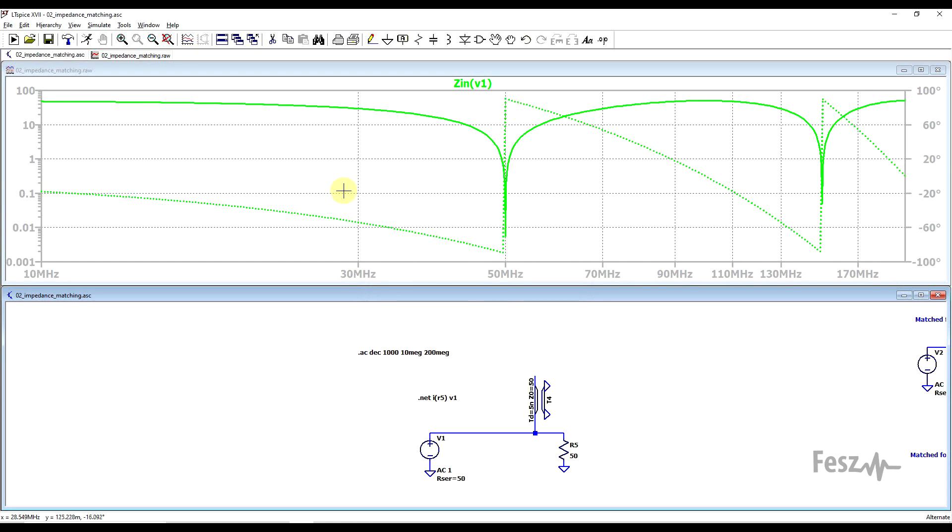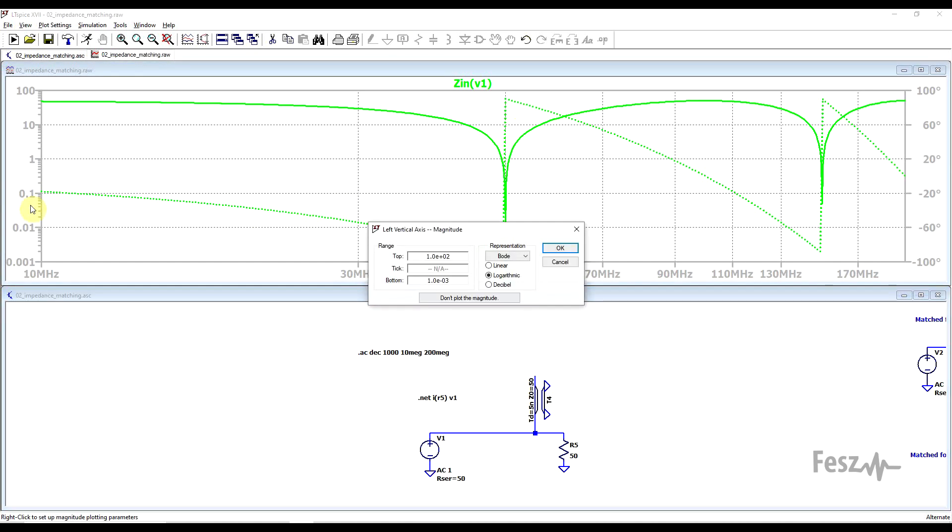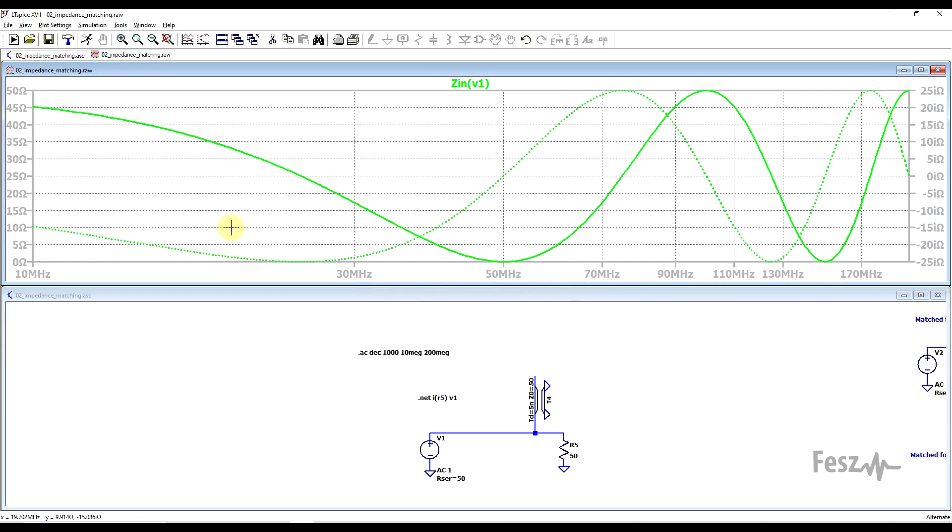But as I just learned, if you right-click on the magnitude, you can change the representation from Bode to Cartesian, and now you have a very clear real and imaginary impedance component. So if you want to use this filter at any other frequency where you do not have an imaginary impedance component, you will need some amount of impedance matching. On the one hand to remove the imaginary bit, and on the other to get to 50 ohms or whatever the system impedance is.